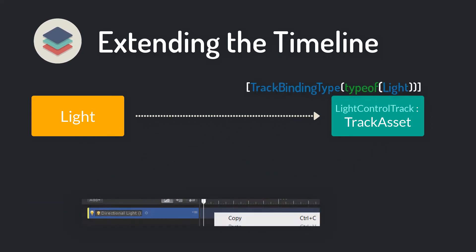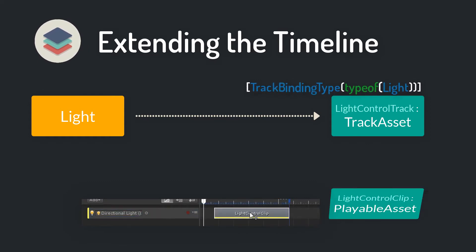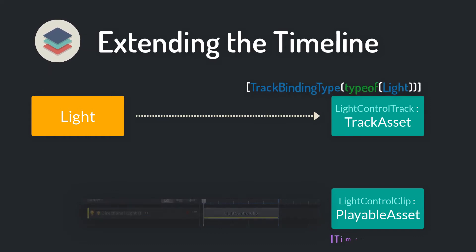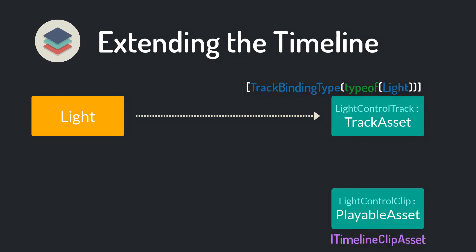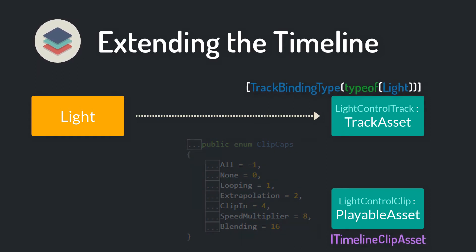Our track isn't very useful without timeline clips. In order to add clips, we need a clip script which inherits from PlayableAsset. The script also needs to implement the ITimelineClipAsset interface. This forces you to implement the clip caps, which specifies if your clips can be blended together, or if it supports time scaling or extrapolation, for example.